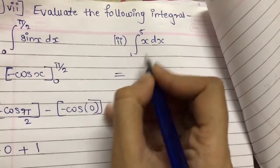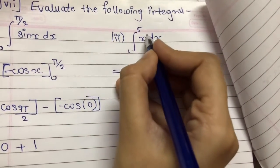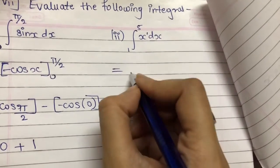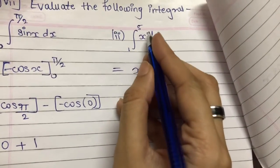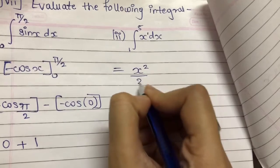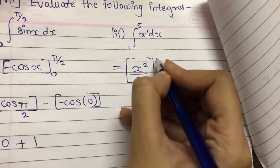Now for second, find integration of x. Now here you have power 1. So for integration, it is x, 1 plus 1, that is 2, upon 2, square bracket and the limit values.